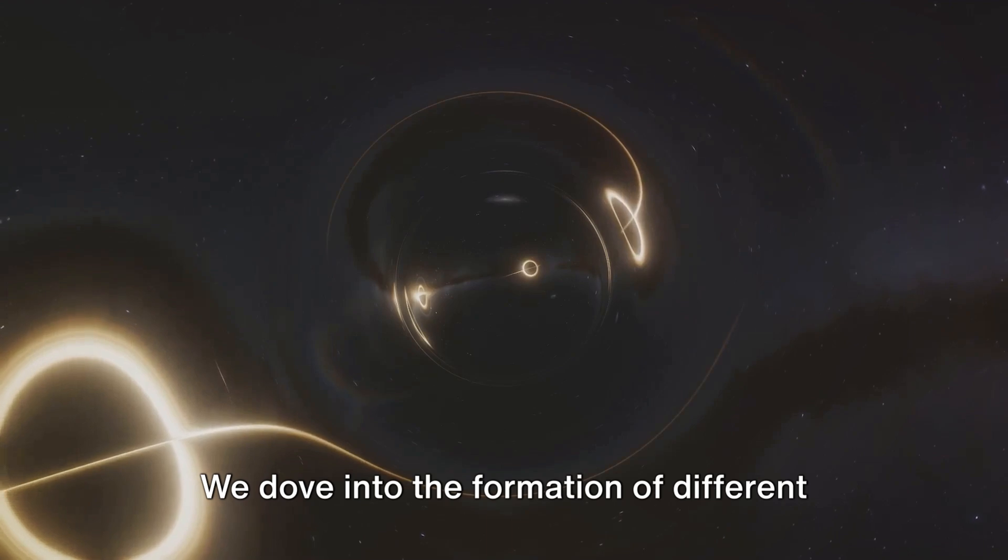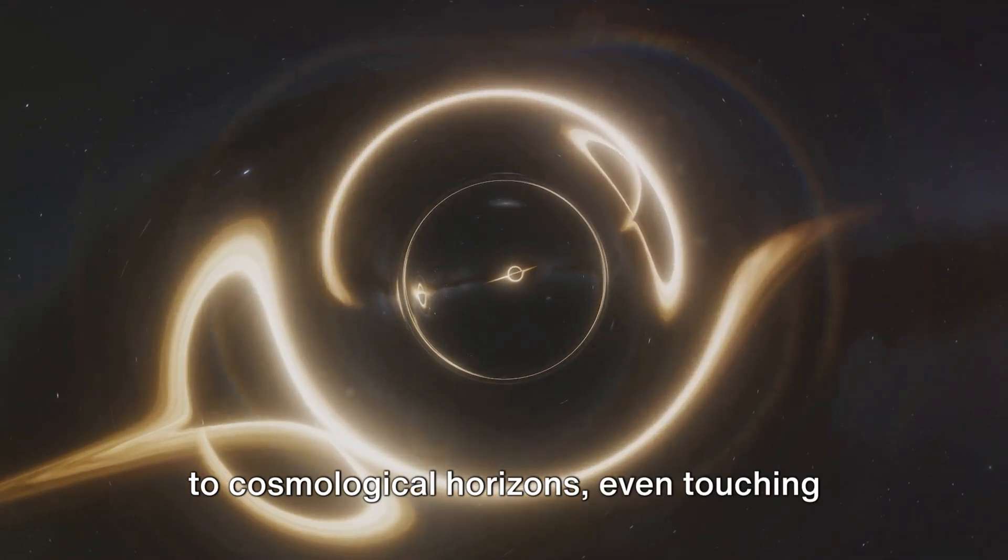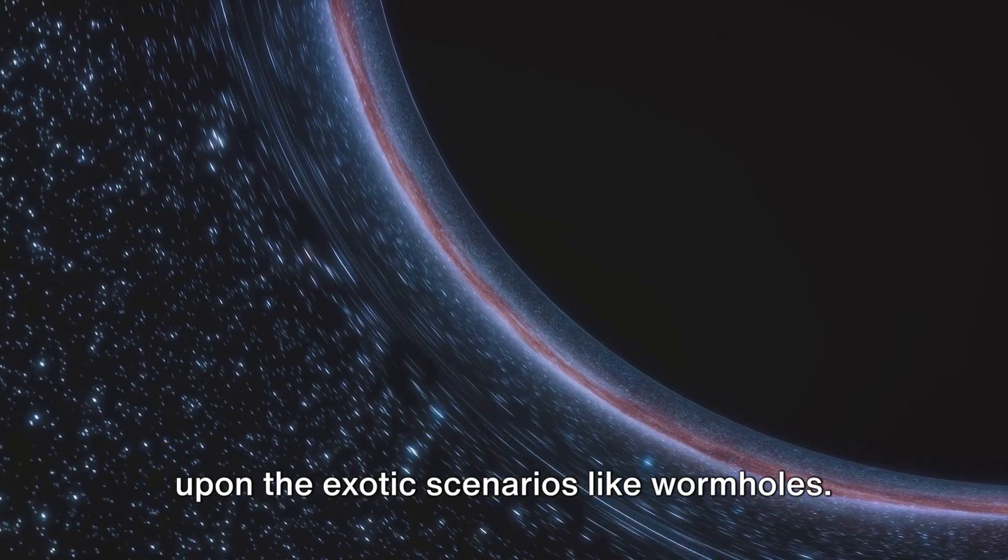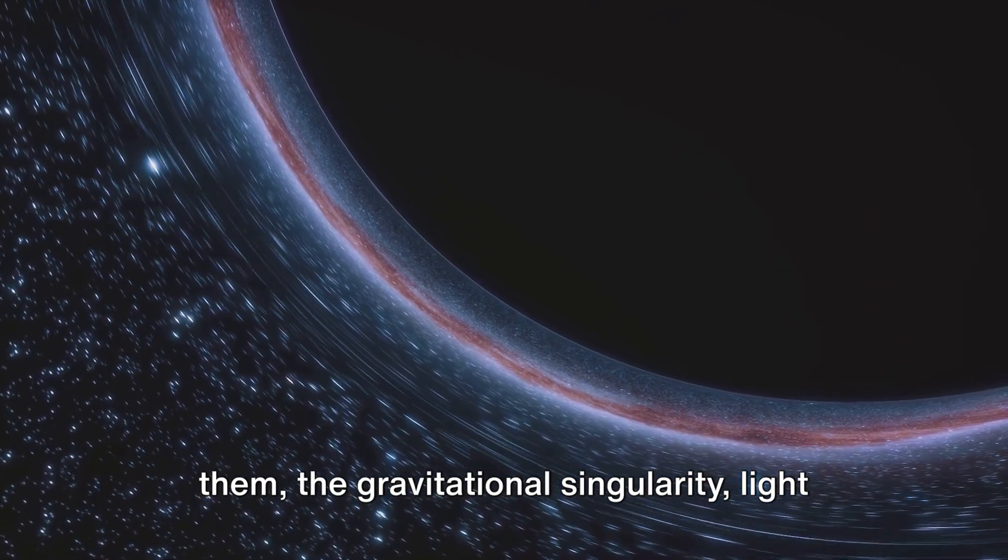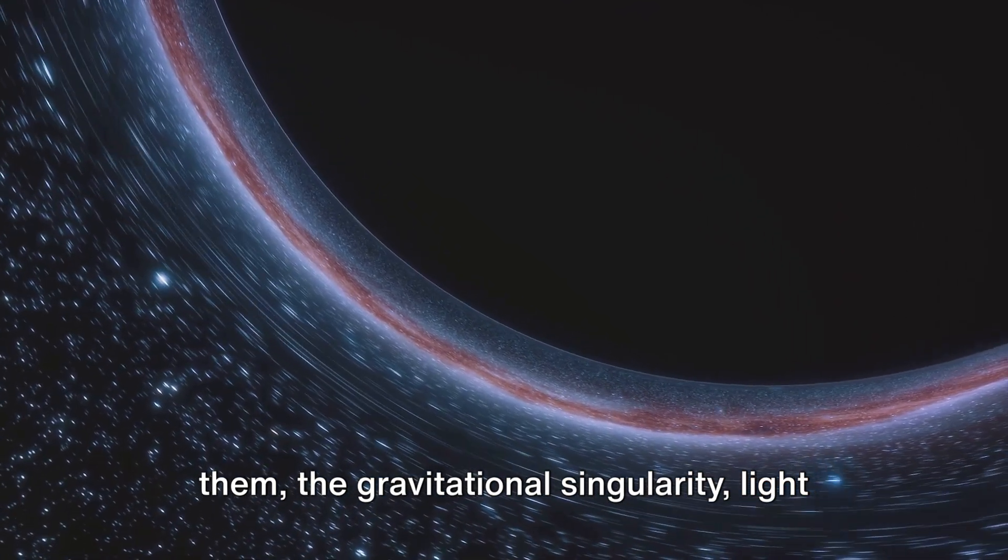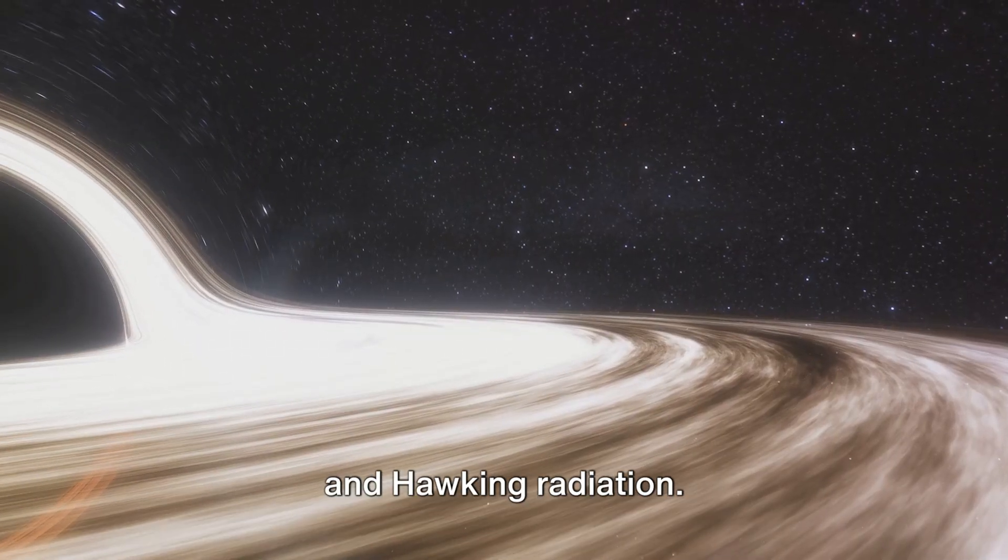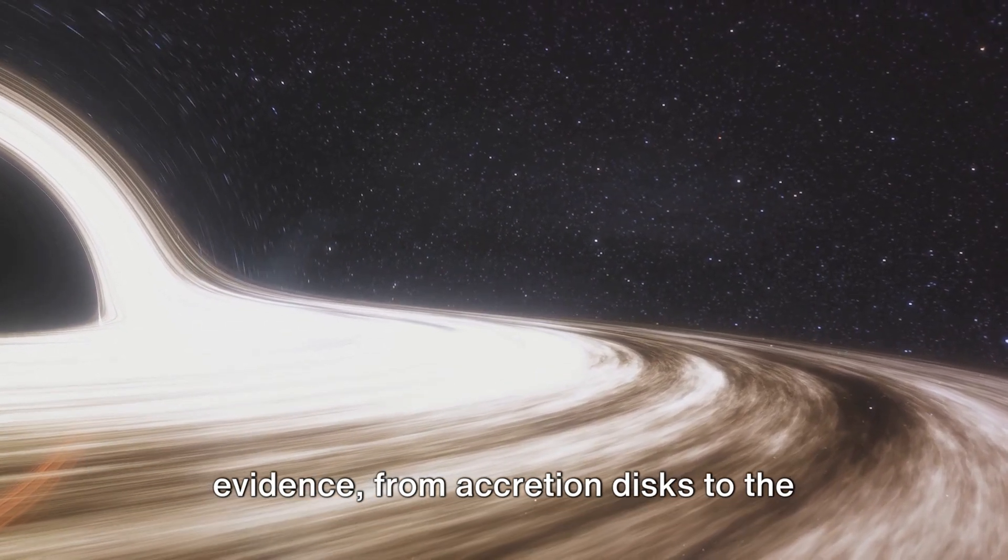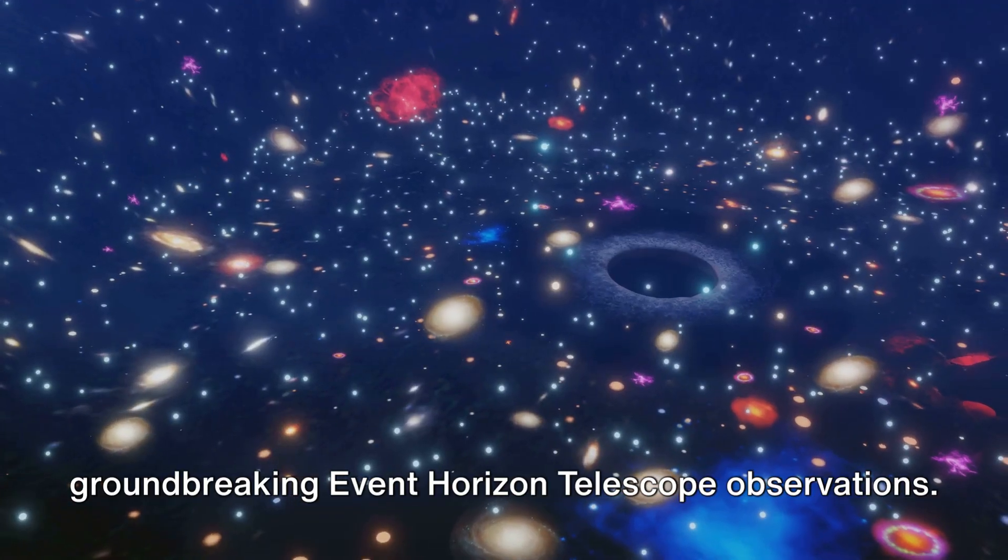We dove into the formation of different types of event horizons, from black holes to cosmological horizons, even touching upon the exotic scenarios like wormholes. We explored the intricate physics behind them, the gravitational singularity, light cones, and the intriguing Penrose process and Hawking radiation. We also delved into the observational evidence, from accretion disks to the groundbreaking Event Horizon Telescope observations.